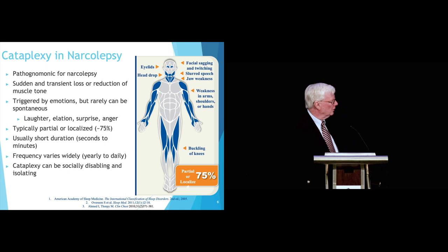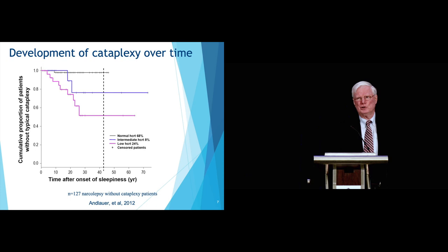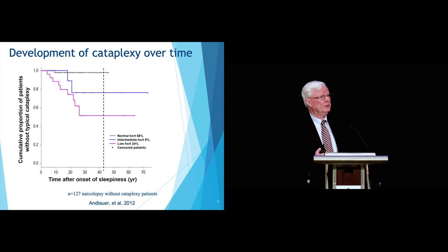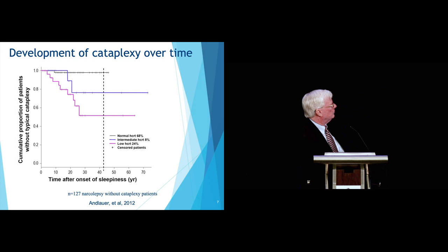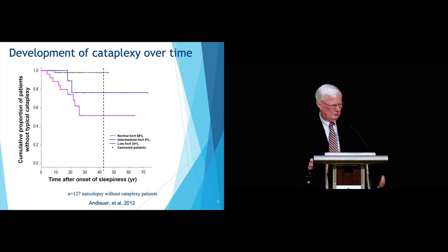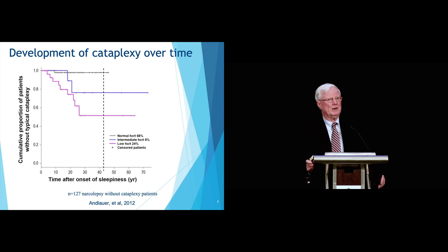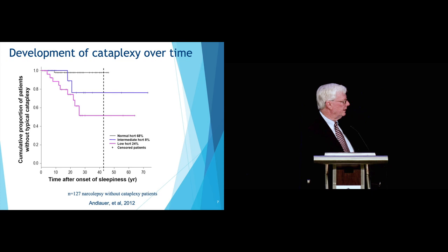Cataplexy generally doesn't occur at the very onset of narcolepsy — in most cases, sleepiness begins first, and cataplexy can occur many months later, even over 20 months later. Typically cataplexy occurs within the first six months of sleepiness onset, but may occur much later. So many people think they don't have type 1 narcolepsy because they don't have cataplexy, but then it develops. The disease process is still the same from the beginning.